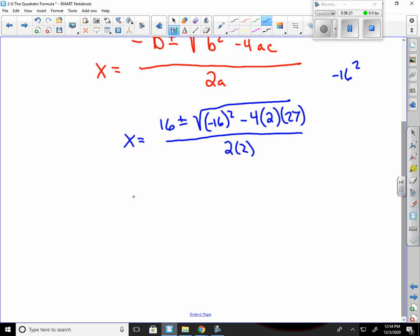Now we can start to simplify this. 16 plus and minus. Negative 16 squared is 256. Then I can do 4 times 2 times 27. 4 times 27 gives us 108. 108 times 2 is 216. And then that's over 4.